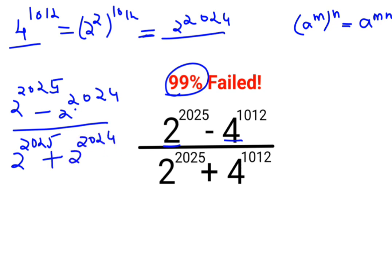Now what we can do is we can just take 2 raised to 2024 common. And in the bracket what we are left with? See when I take 2024 outside from 2025, I am just left with 1 degree of 2 minus 1. Similarly here also.